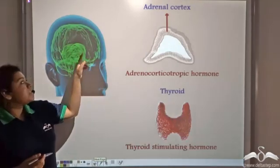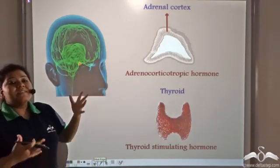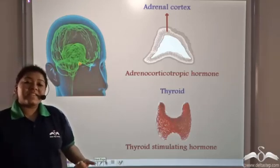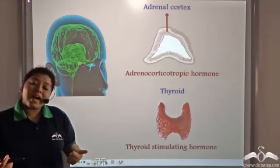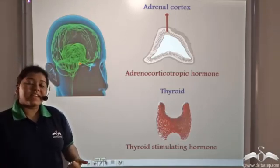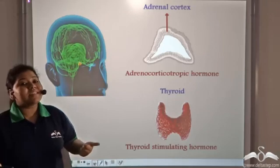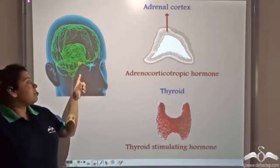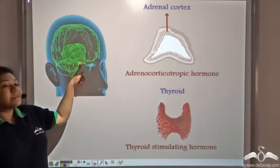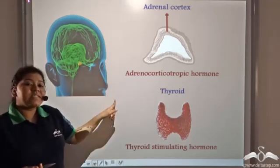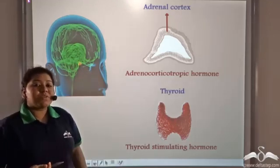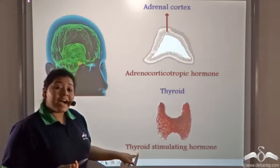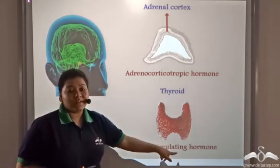Since the pituitary gland enhances or stimulates the secretion of all other glands, it must be secreting stimulating hormones. The pituitary gland secretes one such stimulating hormone which is known as the thyroid stimulating hormone.